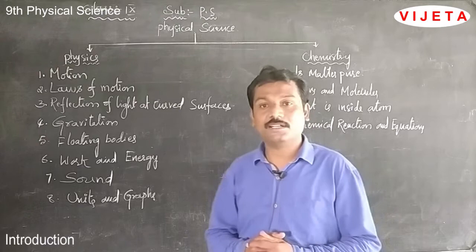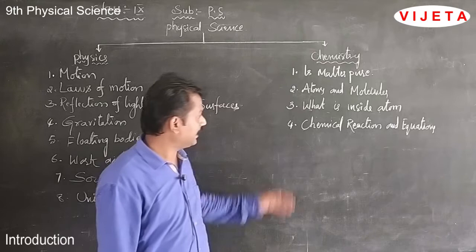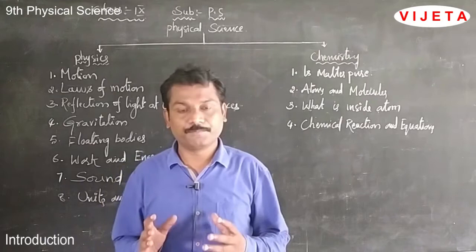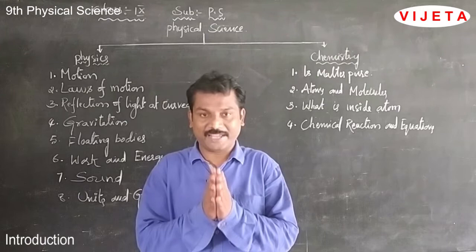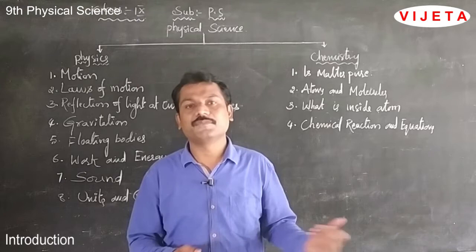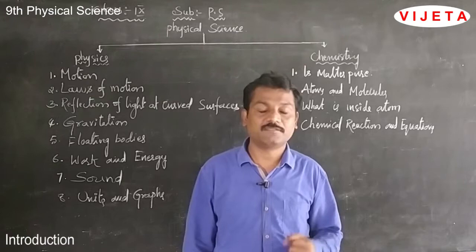Now coming to the chemistry part. The first chapter is 'Is Matter Pure?', the second is atoms and molecules, the third is what is inside the atom, and the fourth is chemical reactions and equations. What are the topics in the first chapter, 'Is Matter Pure'? Substances are classified into two parts: pure substances and mixtures. A substance consisting of the same atoms is called a pure substance. A substance consisting of different types of atoms is called a mixture. Mixtures are classified into homogeneous mixtures and heterogeneous mixtures.